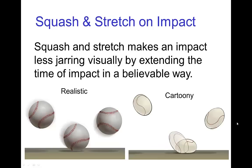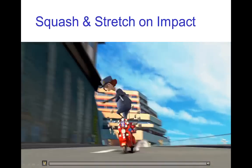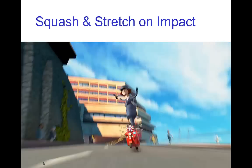In animation, squash and stretch is often used to make an impact less visually jarring by extending the time of impact in a believable way. That may be a cartoony extension through squash and stretch, but it still feels believable within the context of being cartoony. A more realistic impact, say for baseball, happens so suddenly that it can be somewhat jarring when you see it on screen.